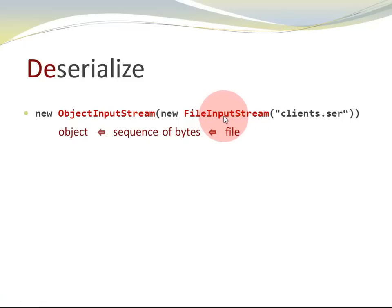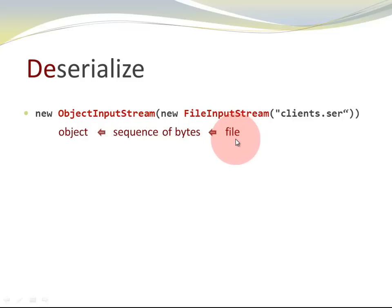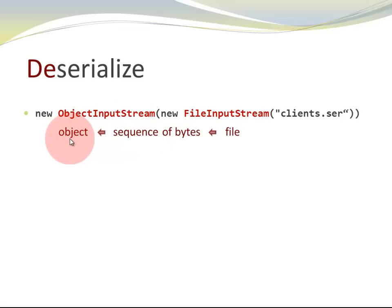For the FileInputStream, it doesn't really matter where the sequence of bytes go to — whether I just print them on a screen, or whether I pass them on to the ObjectInputStream so an object can be recreated. Once again: the FileInputStream opens a file and creates a sequence of bytes based on the data in the file. The ObjectInputStream takes that sequence of bytes and recreates the object.